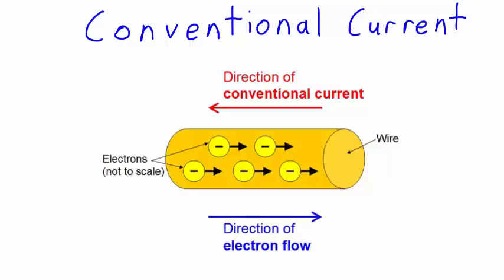Because this system of positive charges moving was used for such a long time, most electricians and engineers still use it today. Here's a diagram to help explain the difference between conventional current and electron flow.